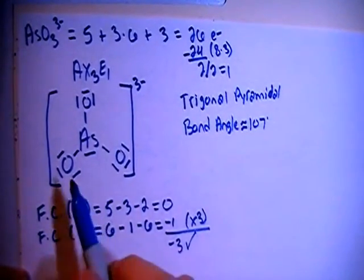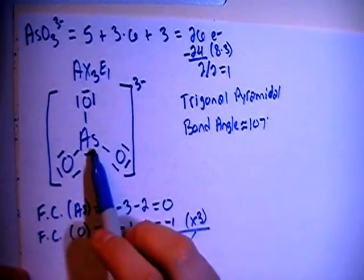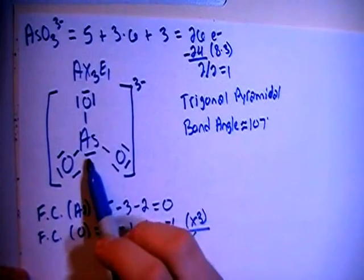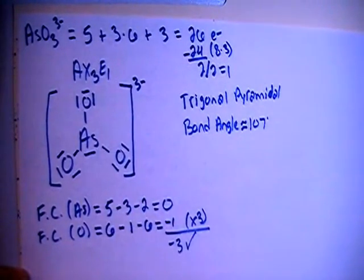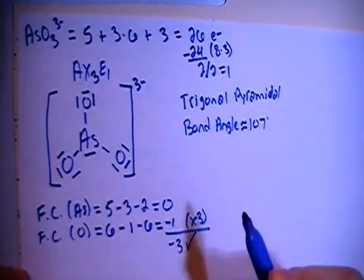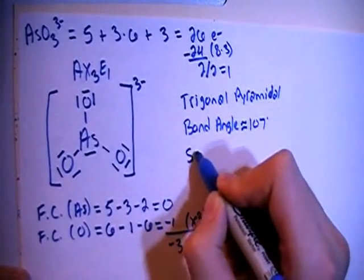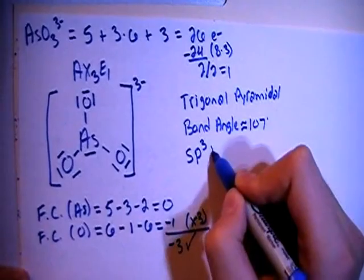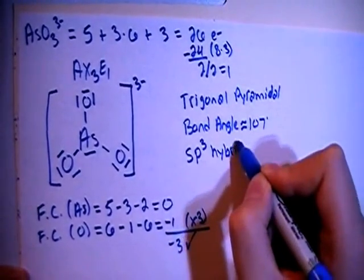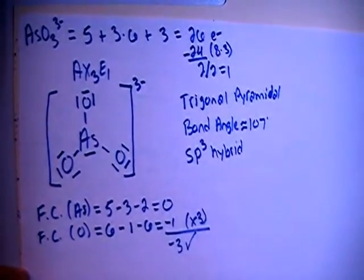In terms of hybridization, looking at the central arsenic here, you have 1, 2, 3, 4 electron groups, or potential bonding sites, so that means we need 4 hybrid orbitals, so that's going to give us an SP3 hybrid. We have 1 S and 3 Ps for a total of 4 orbitals to match up with the 4 electron groups.